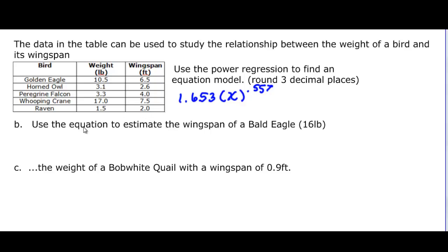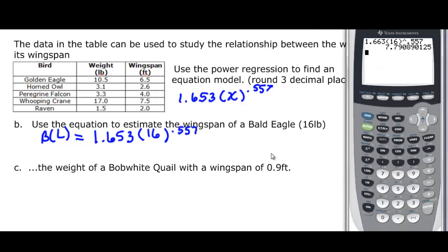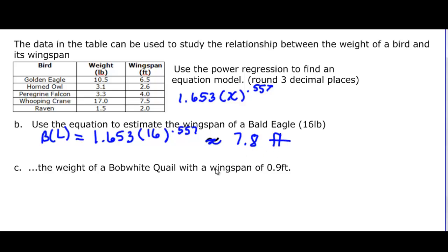So now we want to use the equation to estimate the wingspan of a bald eagle, which is 16 pounds. Now X, if you look back at our table, X is our weight and Y is our wingspan. X is in pounds, Y is in feet. So we know that we're solving for the wingspan, and we can call this maybe B of L since it's pounds. So B of L is going to be equal to 1.653 times 16, which we know to be X, to the 0.557. And if we pull up the calculator and put that in there, and we find that the bald eagle has a wingspan of approximately 7.8 feet.